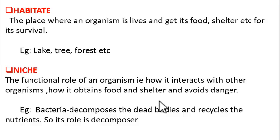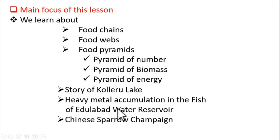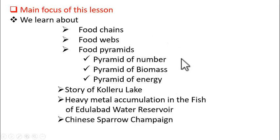These are the few basic concepts of environment. Now, the main focus of this chapter is food chains, food webs, food pyramids, the story of Kolleru Lake, heavy metal accumulation in the fish of Nizamabad water reservoir, and the Chinese Sparrow campaign. In our next videos, we are going to see these concepts one after the other. Thank you, students.